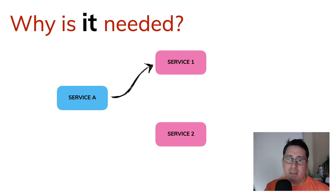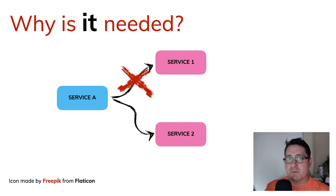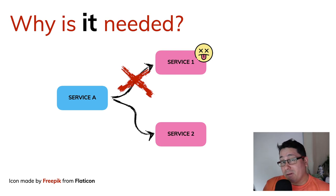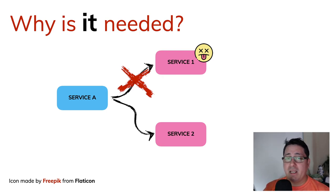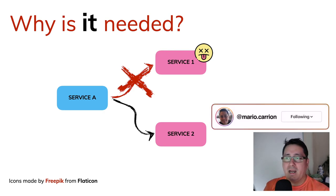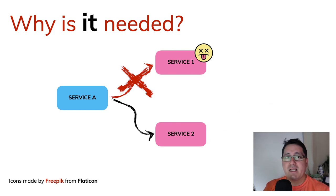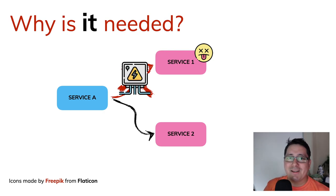So why is it needed? Consider this use case: there is a Service A that depends on Service 1 and Service 2, and they communicate to maybe augment the data that we need to return back to the client. But what happens if for whatever reason Service 1 fails? Should we fail in the context of Service A? It depends on the business logic. Maybe if any of these services fail we should fail, but what if it's only augmenting data or adding new fields? This is when the circuit breaker design pattern comes into place.